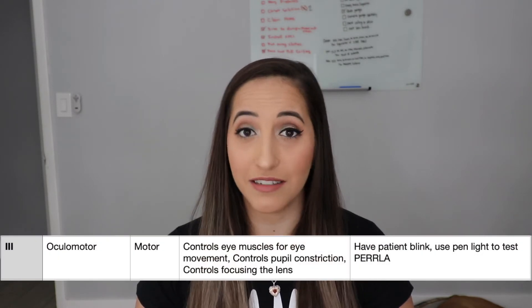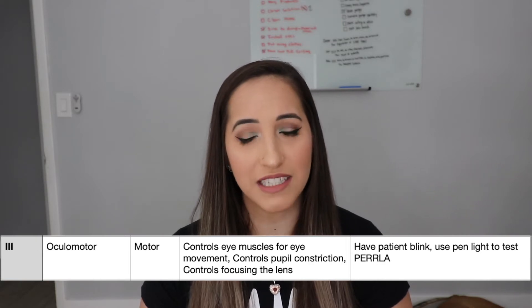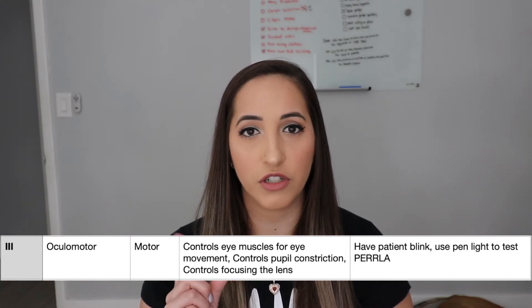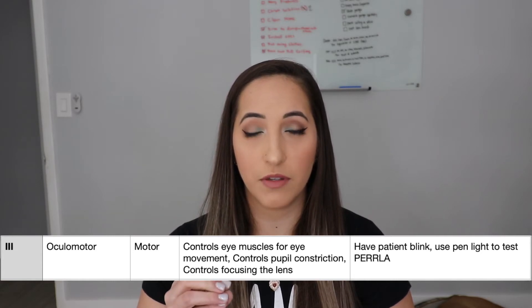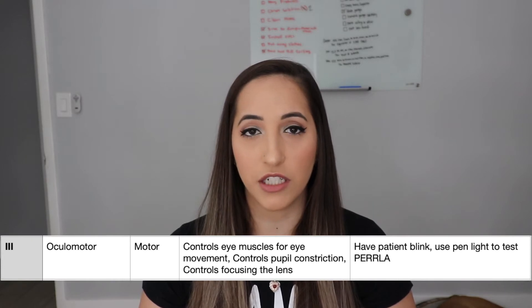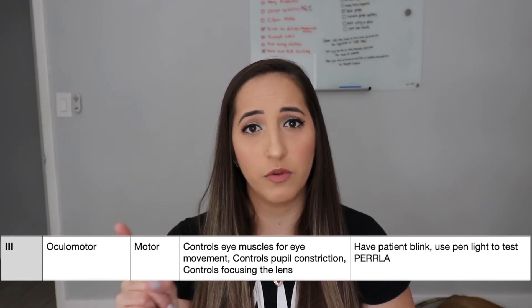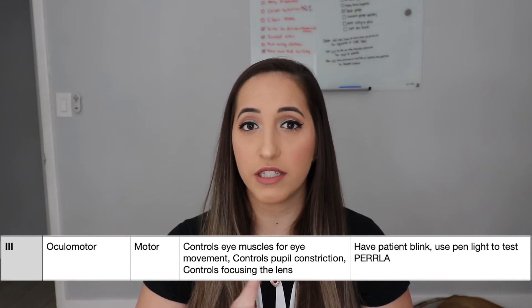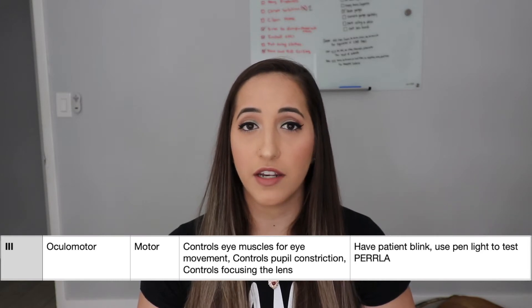The third cranial nerve is the oculomotor nerve. It is a motor nerve. The function of the oculomotor nerve is that it controls most of the eye muscles that control eye movement. It also controls the constriction of the pupil and focusing of the lens in the eye. To test for this, have the patient blink, and then you can use a pen light and check for PERLA — pupils equal reactive round to light and accommodation — making sure they're the same on both eyes. You can also use your finger and have them follow it and do the six cardinal gazes. When testing for the six cardinal gazes, you're not only testing cranial nerve number three, but also cranial nerve number four and number six.